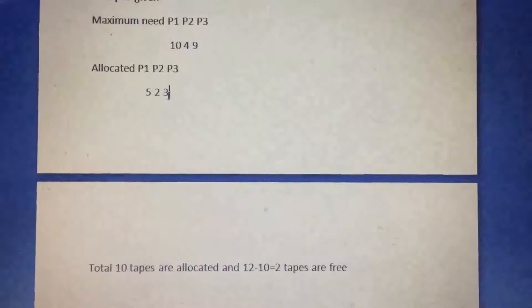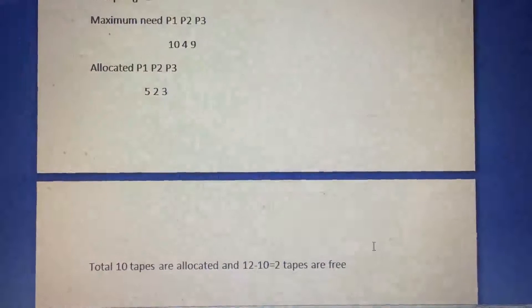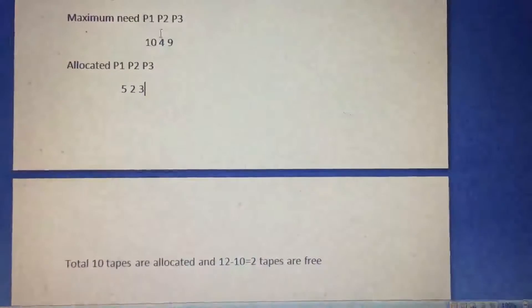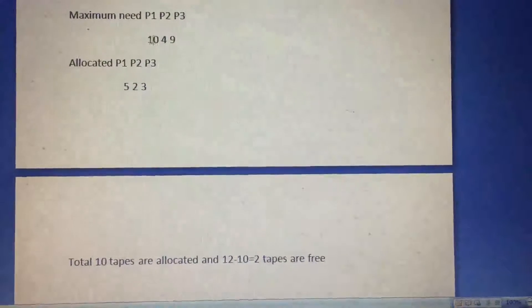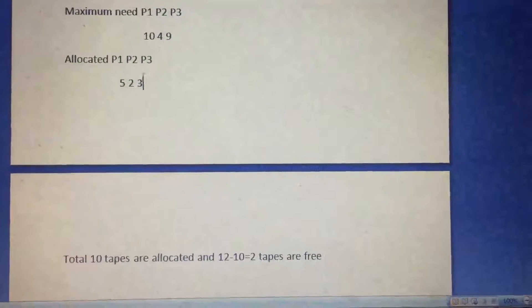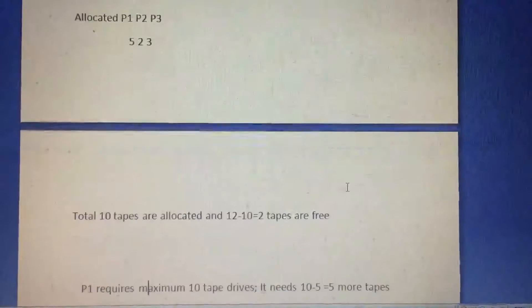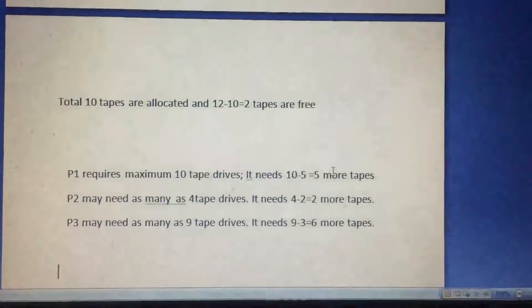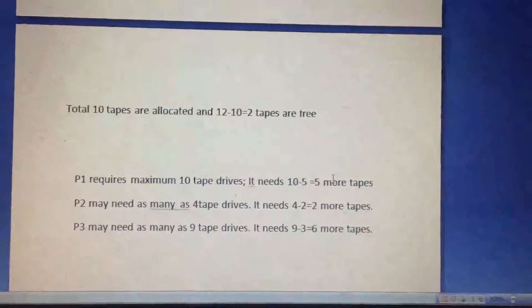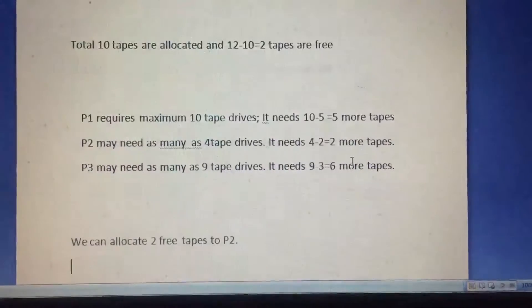So what is the maximum need? What is the need of the process? You can calculate and deduct: 10 minus 5, 4 minus 2, 9 minus 3. This is the need. P1 requires the maximum 10 tapes. It needs 10 minus 5, which is 5 more tapes. P2 needs 2 more tapes, and P3 needs 6 more tapes. But we have only two tapes that are free.